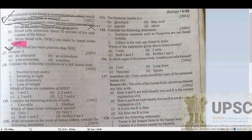The blood cell RBC count is 3 to 5 million per microliter. You can consider that option — the RBC count is in millions.